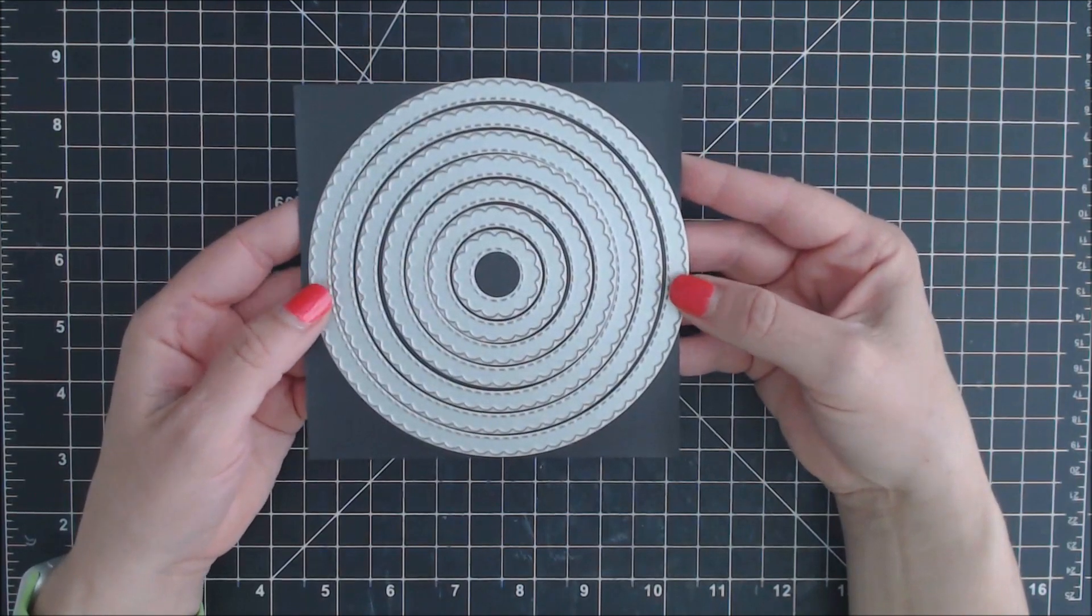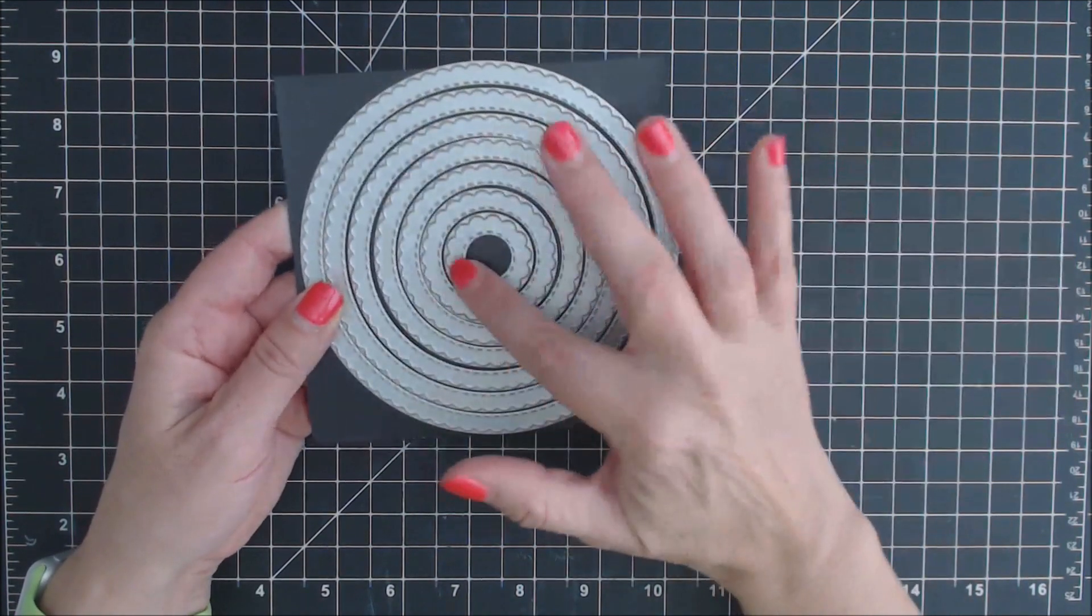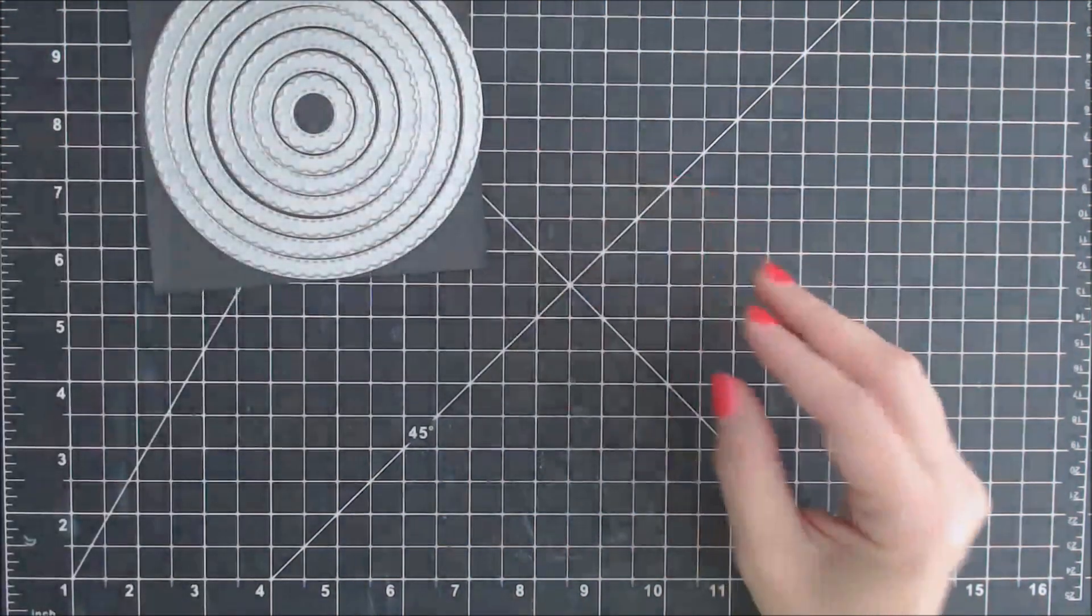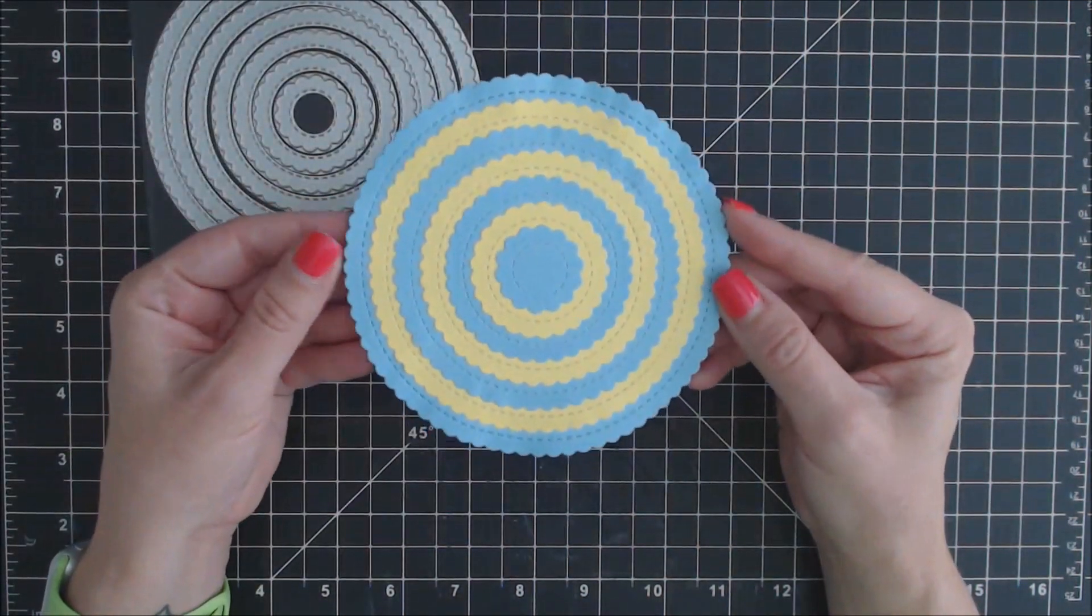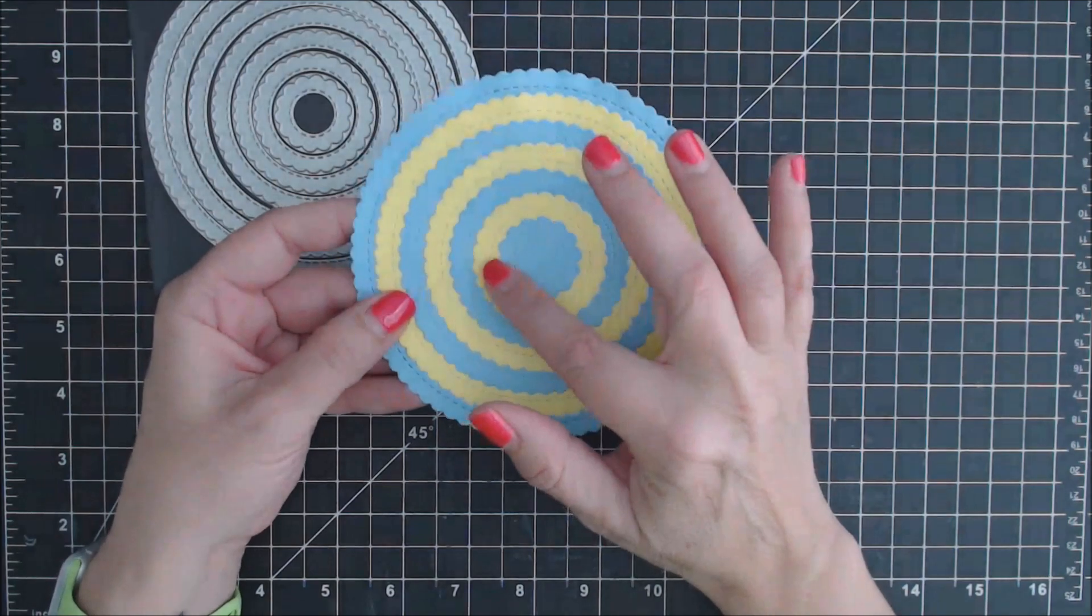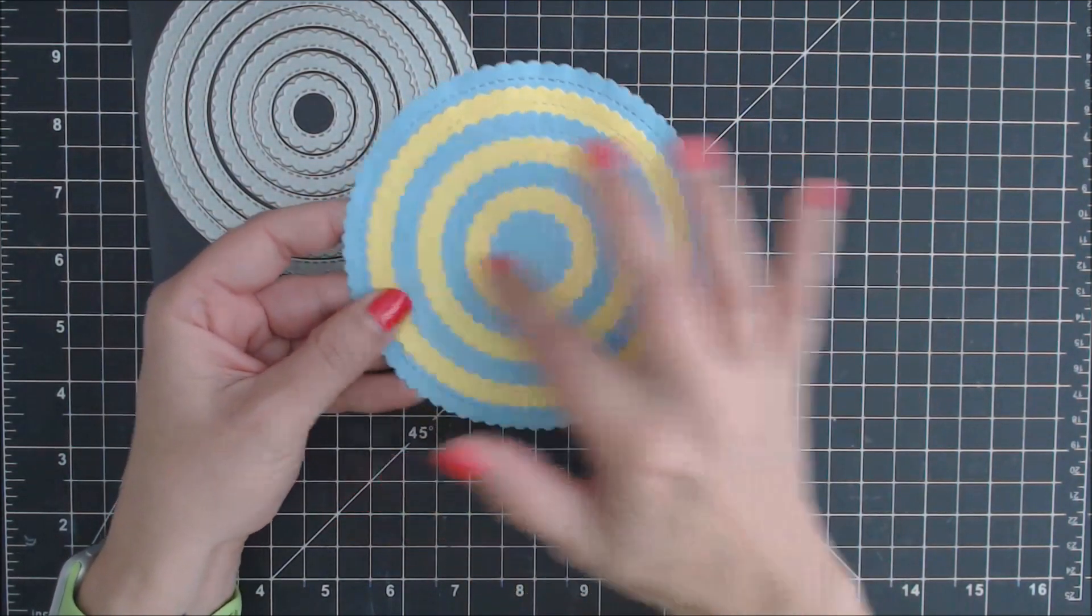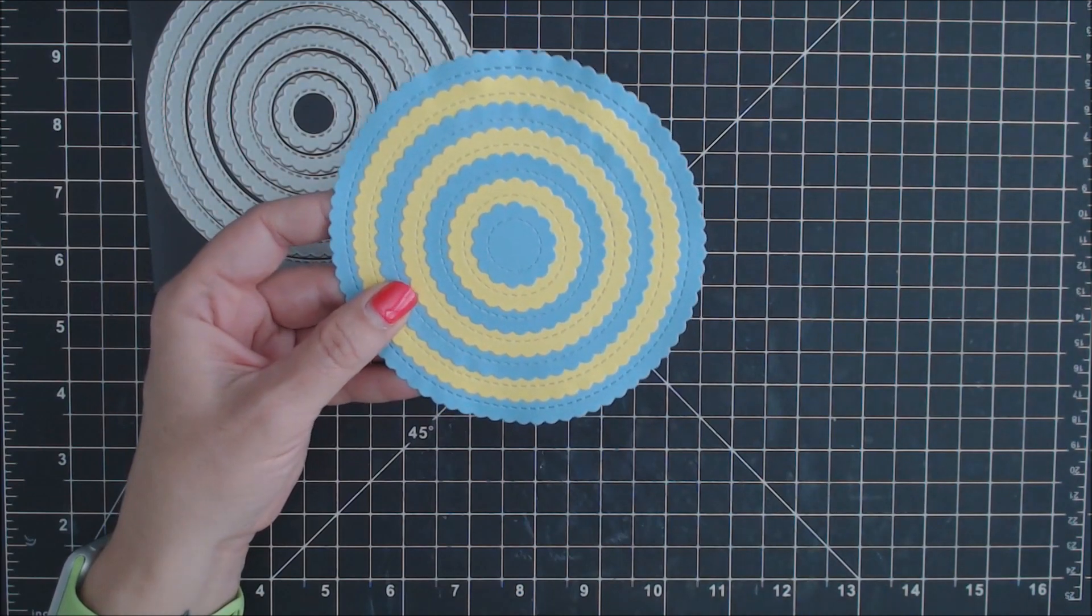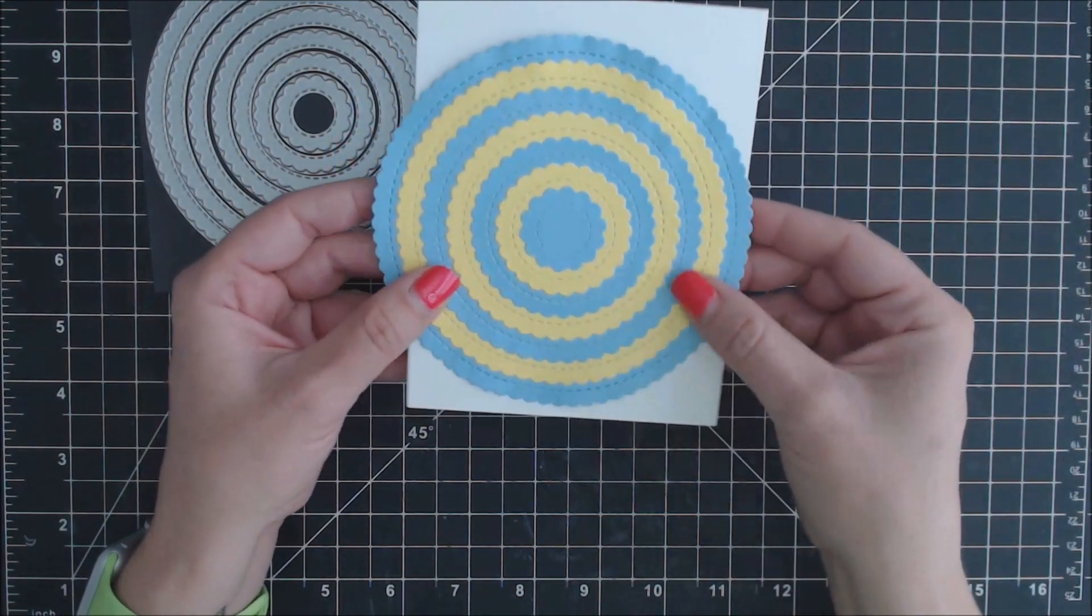The first one is the stitched scallop circle die set. This one contains seven different sizes of the stitched scallop circles. Here I have them cut out. The sizes range from the smallest one at an eighth to four and seven eighths of an inch, and I will have all the dimensions of the dies later on in some still shots.